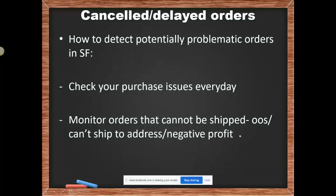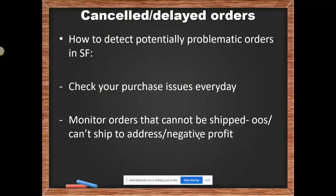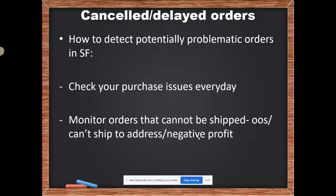The third common reason for orders to fail is negative profit — meaning that by the time SaleFreaks went to place the order, the price went up, and now you're losing money on the transaction. So SaleFreaks automatically fails the order and lets you decide whether or not you're willing to accept that loss. Maybe you're not willing to lose that much money, and you prefer to cancel.